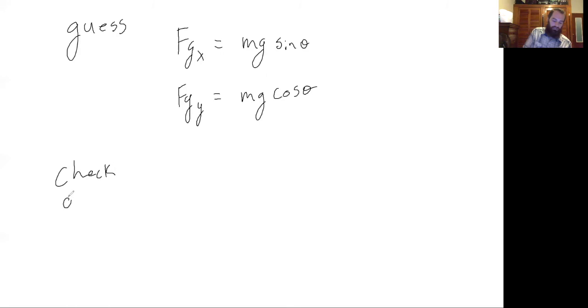Now if we check that again at theta equals zero, we would get mg sine of zero, which equals zero, and then mg cosine of zero. Cosine of zero is one, so that's mg.